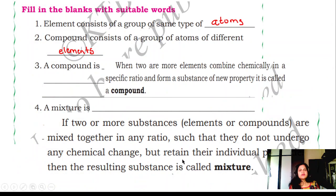Fill in the blanks with suitable words. Element consists of a group of same type of atoms. Compound consists of a group of atoms of different elements.